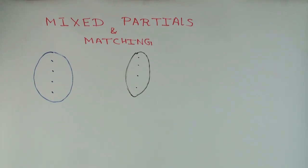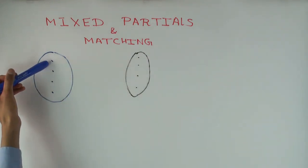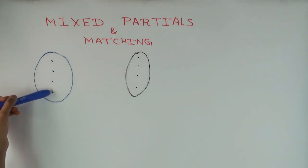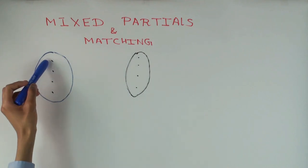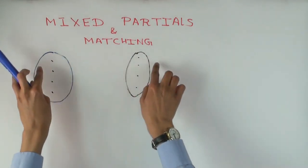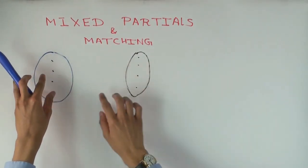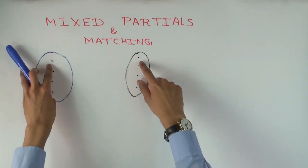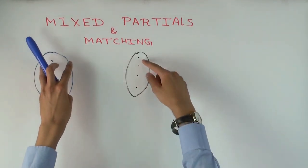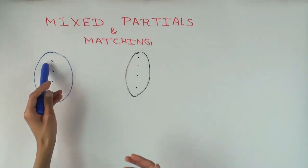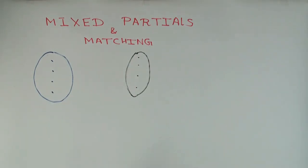That is the idea of how a mixed partial tells you how you should match two different groups. By match, I mean something like you have four people here and four people here, and you need to decide who to pair — put them in pairs. Each person can go in exactly one pair with the other one, so a blue dot goes with a black dot, and you have to decide which blue dot goes with which black dot.